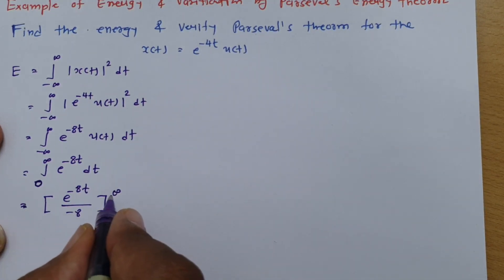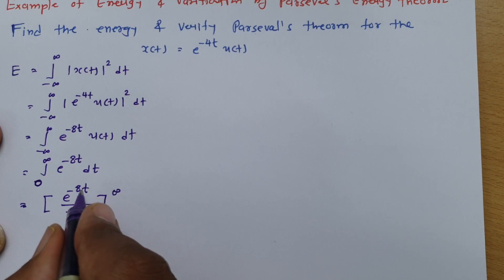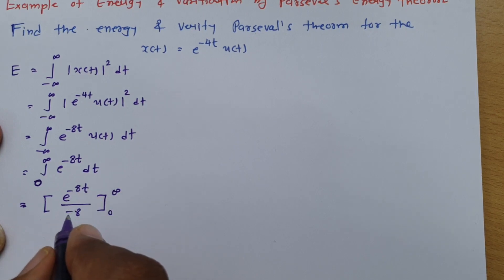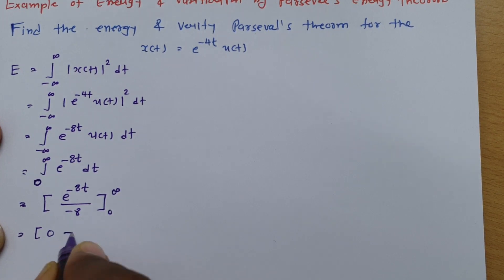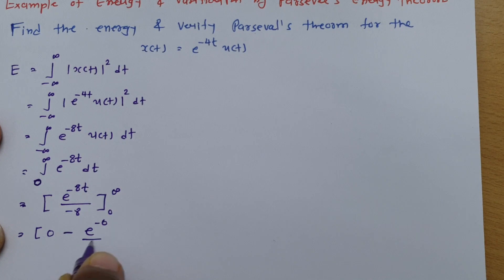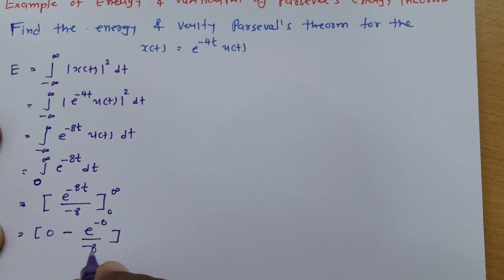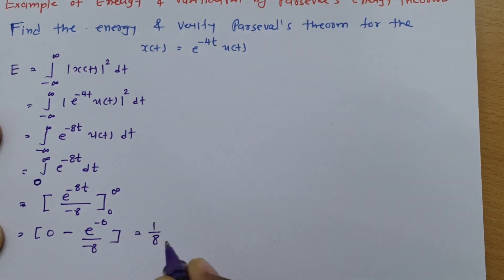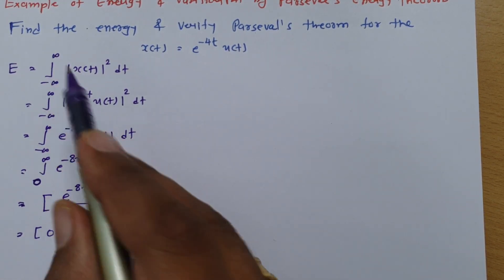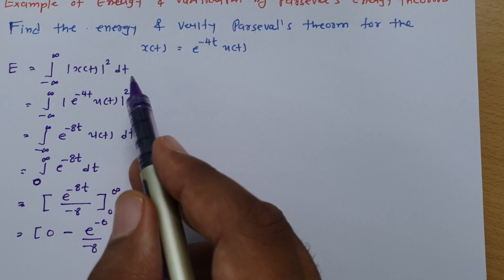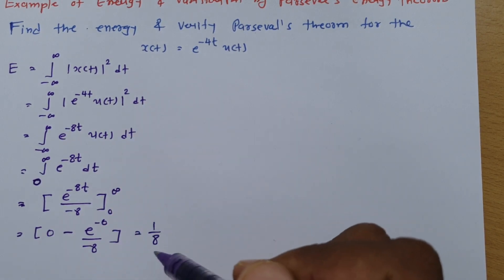Placing the limits: e^(-∞) = 0, so the first limit gives 0. Then minus e^(0) / (-8) = 0 minus (1/(-8)), and the two negatives give plus, so the result is 1/8. Therefore, the energy calculated by the basic formula — integration from minus infinite to infinite of |x(t)|² dt — is 1/8.